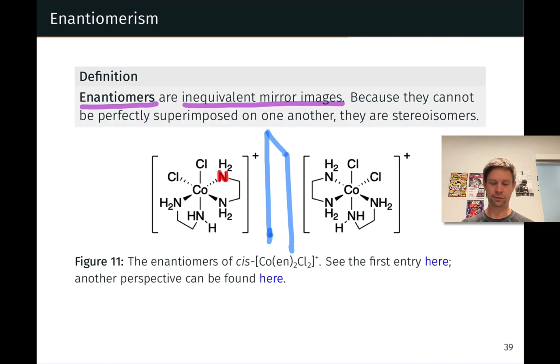if I reflected this ethylenediamine through the mirror, well, I would get this ethylenediamine by sort of sending all the atoms onto that mirror plane and then projecting them out to the other side at an equal distance.